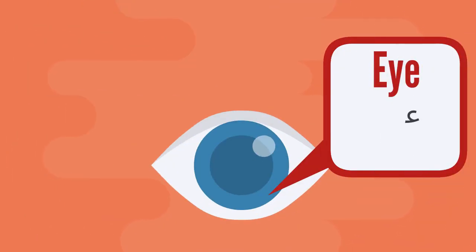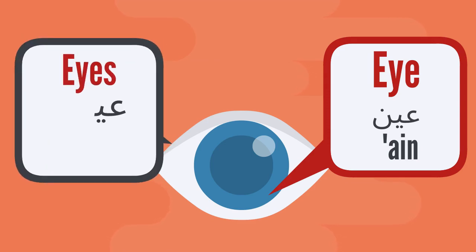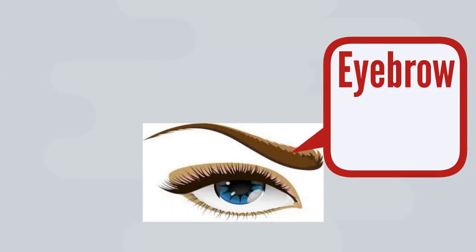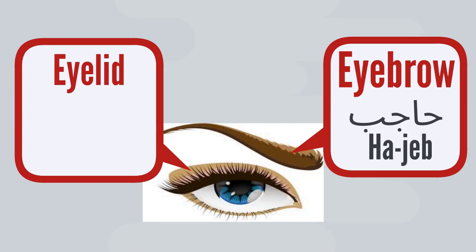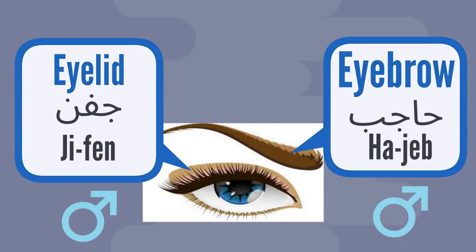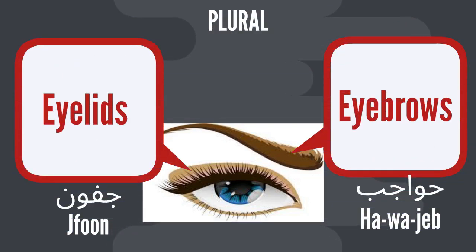Now let's dive into the eyes. Remember that eye is ayan, and the plural for eye is ʿyūn. The eyebrow — hājib. And an eyelid — jifn. Both eyebrow and eyelid are male nouns, so we say hādā hājib and hādā jifn. The plural form for eyebrows is hāwājib. And for eyelids — shifuun.